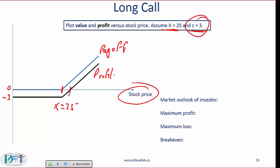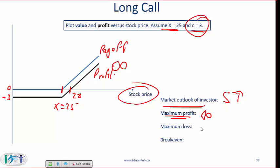The break-even point is 28. The maximum profit is infinite — as the stock price keeps going up, the payoff and the profit keep going up. Your outlook if you invest in a long call is bullish: you expect the stock to go up. Maximum profit is infinite, maximum loss is C (how much you pay for the call option), and the break-even point is the strike price plus the call option price (X plus C). Rather than memorizing that, you can just quickly sketch this and from the sketch it is obvious that the break-even point is X plus C.